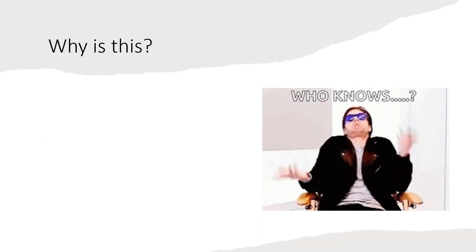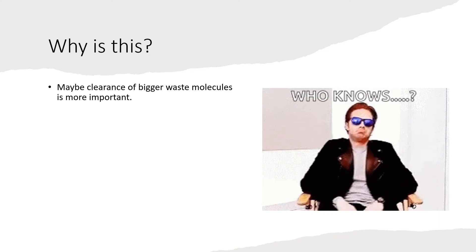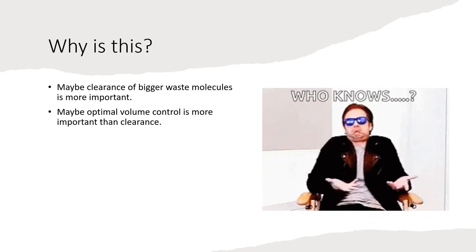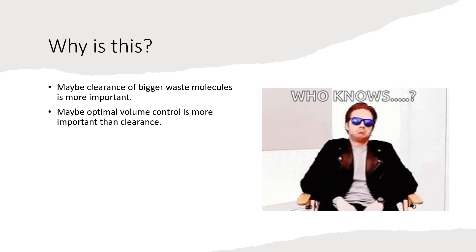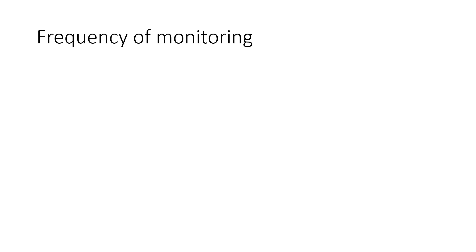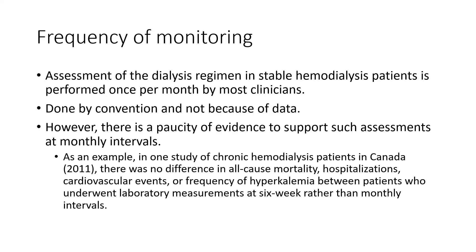So why does a higher Kt/V not translate into better clinical outcomes? No one knows. Maybe it's because we're focusing on small solute clearance but ignoring larger molecules such as middle molecules or protein-bound solutes. Or maybe optimal volume control is much more important than clearance — and again, this is not taken into account in calculating Kt/V. As an aside, we monitor Kt/V on a monthly basis simply based on tradition, not because of data. In fact, one study in Canada in 2011 found no difference in mortality, hospitalizations, cardiovascular events, or frequency of hypertension between patients who underwent routine laboratory testing at six-week intervals rather than monthly intervals.